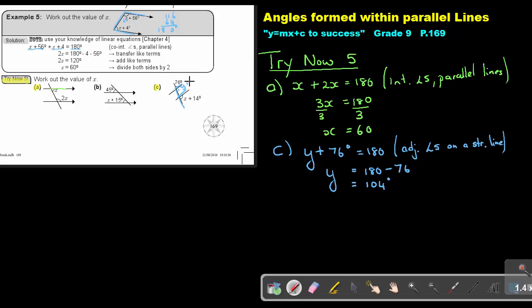So to find Y, I'm just going to say 180 - 76 = 104. Now this is 104. Now I can use corresponding angles and say that this will be equal. So X + 14 = 104, corresponding angles and parallel lines.